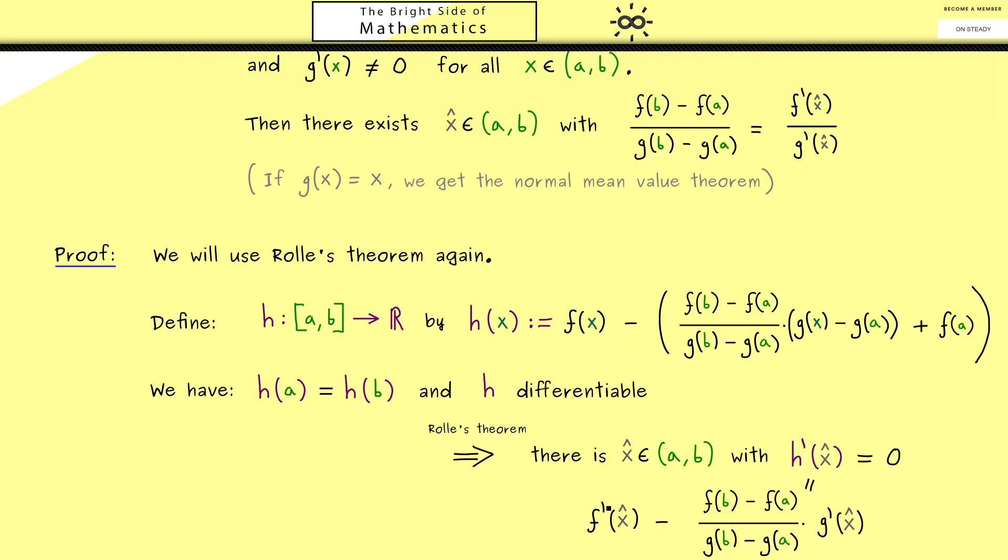Therefore the only thing that is left to do is to calculate h' with this formula. And you see this is not hard at all. We immediately get f'(x̂) minus this strange slope times g'(x̂). Now reformulating shows this is exactly our claim. Hence the proof of this extended mean value theorem is finished.